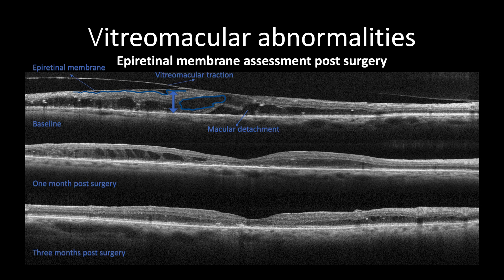This case was managed with pars plana vitrectomy with epiretinal membrane removal and ILM peeling. Within one month, improvement of both foveal anatomy and central macular thickness was observed. However, persistent cystic formation was seen with vision improving to only 20/40 due to ellipsoid zone disruption. Within three months of follow-up, the majority of cysts resolved, but with no improvement of visual acuity due to persistent ellipsoid zone disruption.